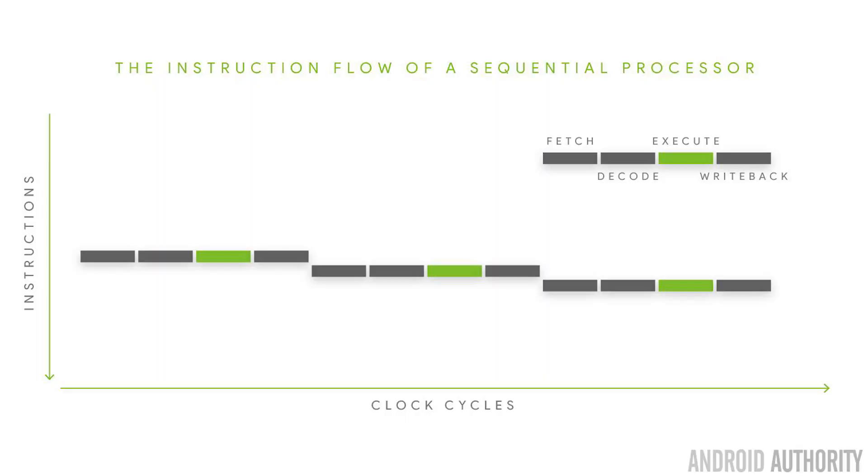A normal computer has a set of instructions that it follows: load up this number from memory, add one to it, put that result back into memory. It's basically a sequence of instructions, and that's how computers work. I've got a whole video on instructions per cycle which goes much deeper into pipelines and decoding and all that, so if you want to watch that, there's a link here.